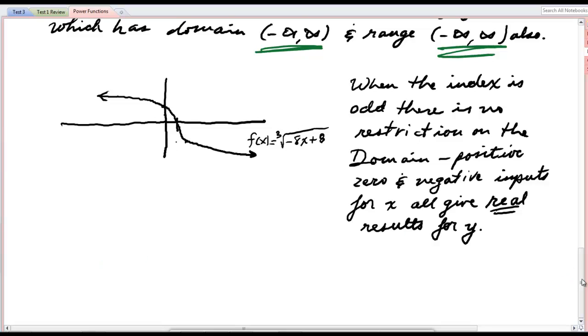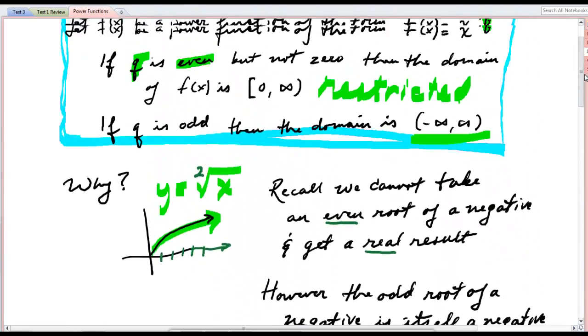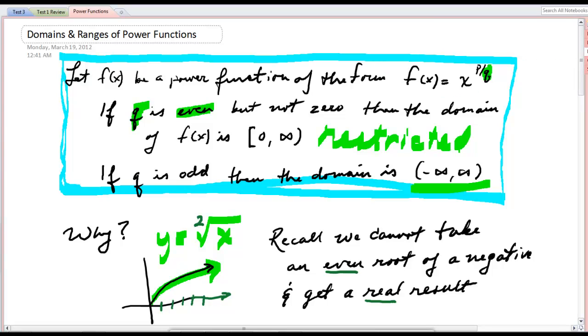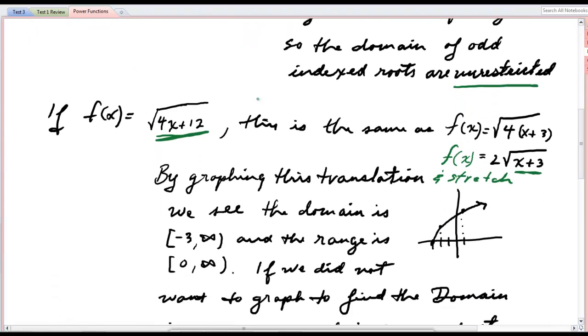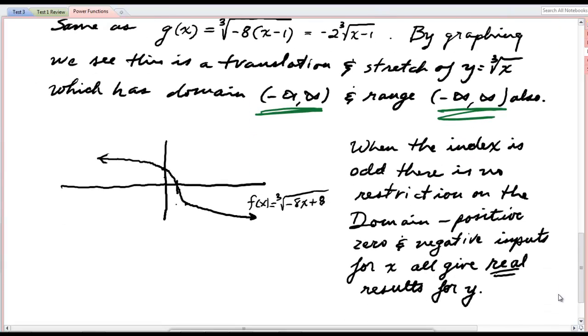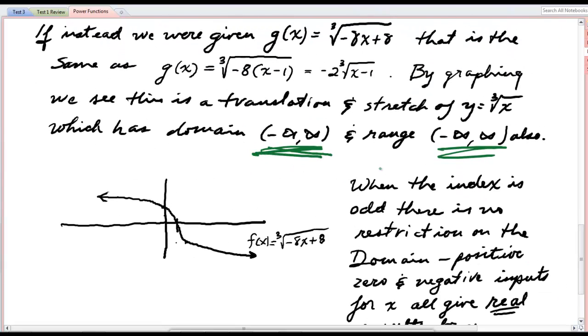So, here's the rule again. Let's go back up top. If it's a power function and the q is even, but not 0, then the domain is 0 to infinity. If q is odd, then the domain is negative infinity to infinity. If, however, it's not in this form, if it has some kind of translation applied to it and it's something like this, whenever this is even, you take what's under the radical and you say that has to be greater than or equal to 0. If it's odd, then your answer for the domain is always negative infinity to infinity.